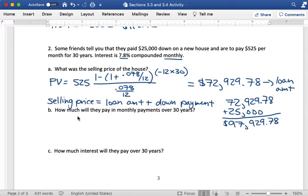For part B, how much will they pay in monthly payments over 30 years? I don't need to use an annuity formula for this again. I'm just using the monthly payment amount. So I know it's $525 per month times 12 months in a year times 30 years. Multiply those together. For 360 payments of $525. When I multiply that out, I get $189,000. So that's how much I'm paying in payments over the course of 30 years.